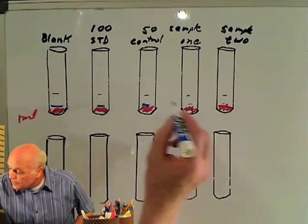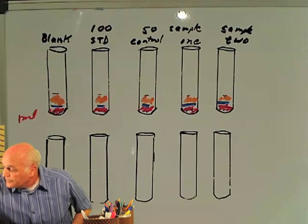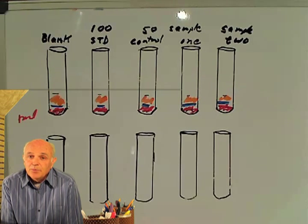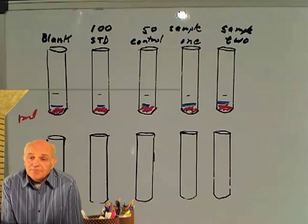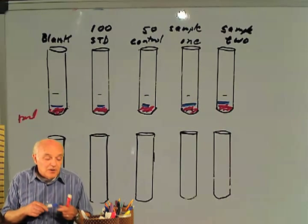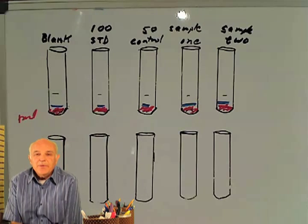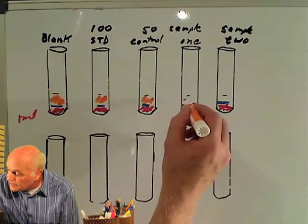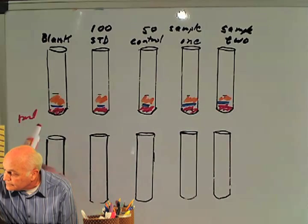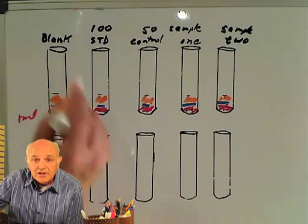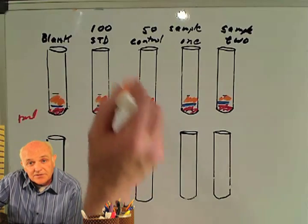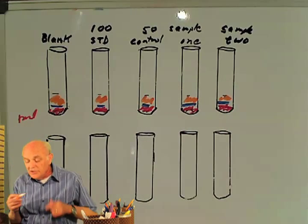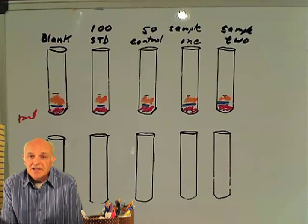Add the internal standard—it's not very much, just put in a little bit of internal standard. A real common stage in extractions is to acidify the sample a little bit, so put in 50 microliters of acid. Then add a milliliter of, let's pick ethyl ether as a solvent. So add a milliliter of ether to each one. You've got the blank, which would be a milliliter of water, the standard would be a milliliter of the standard, a milliliter of the control, a milliliter of sample one, and a milliliter of sample two.